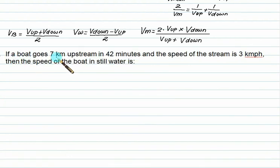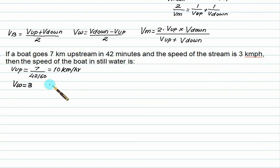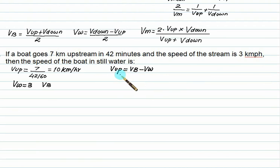If the boat goes 7 km upstream in 42 minutes — 42 minutes equals 42/60 hours — the upstream speed is 7 divided by (42/60), which equals 10 km/h. The speed of the stream Vw is 3. Since Vup equals Vb minus Vw, we have 10 equals Vb minus 3, so velocity of boat comes out to be 13 km/h.